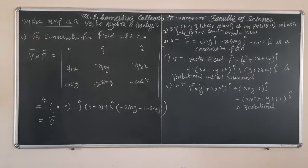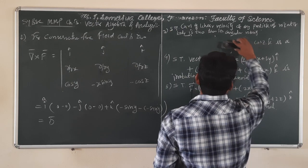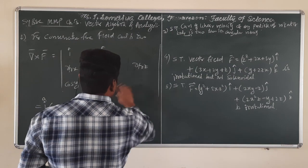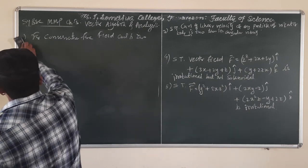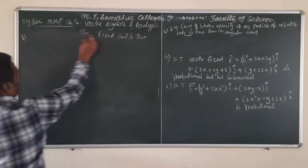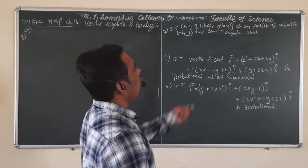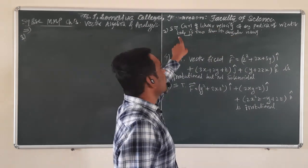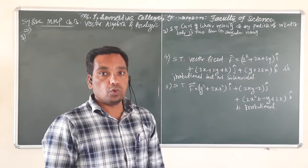Since curl of this force is zero, such a force field represents a conservative force field. With this we finish problem number two. Now we are going to solve problem number three: show that the curl of linear velocity of any particle of a rotating body is two times its angular velocity.